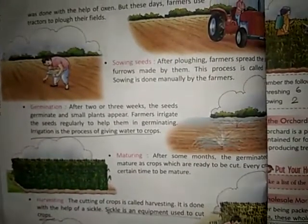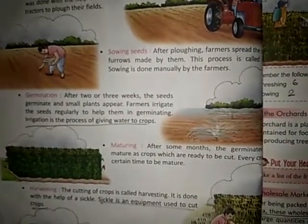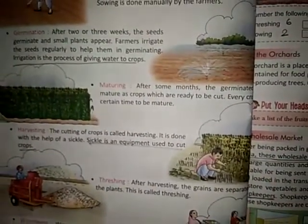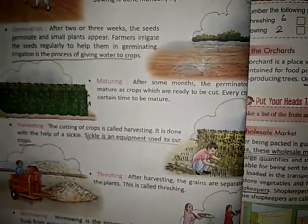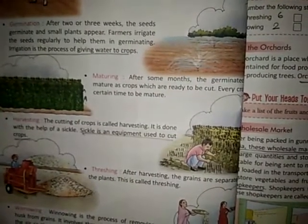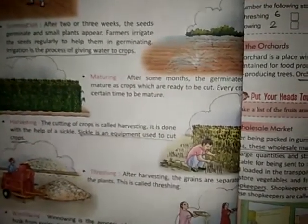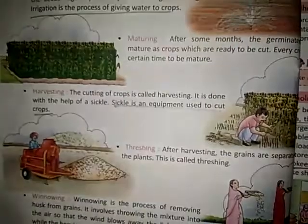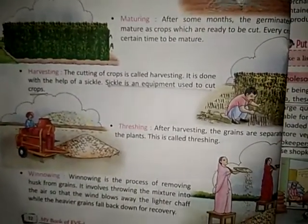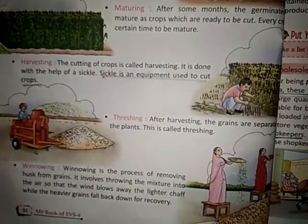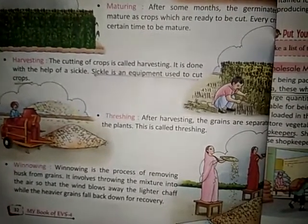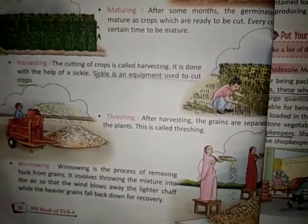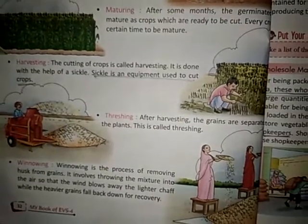Fourth is maturing. After some months, the germinated seeds mature or grow as crops which are ready to be cut. Every crop has a certain duration or time to be mature. Fifth is harvesting. The cutting of crops is called harvesting. It is done with the help of a sickle. A sickle is an equipment used to cut crops.